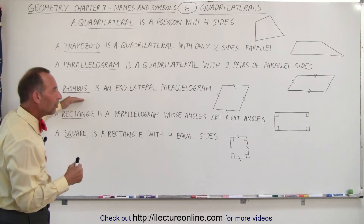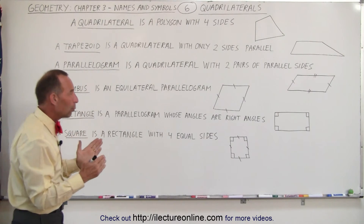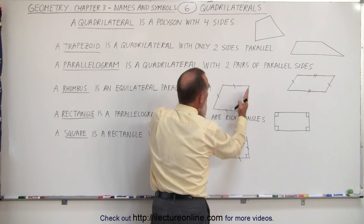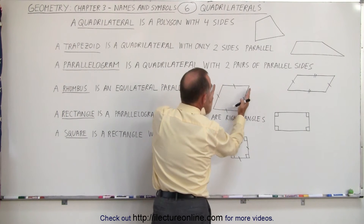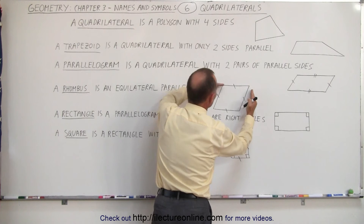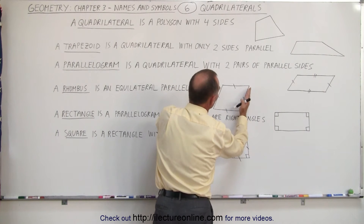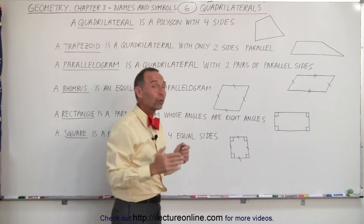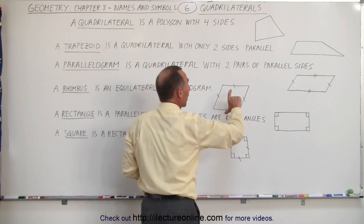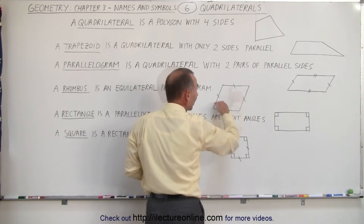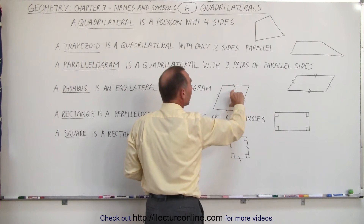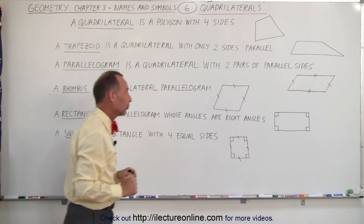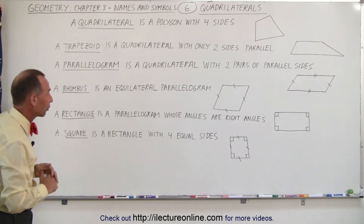A way to think about a rhombus is to take a square and push on one corner to make it look like this. So if we take a square and push it on one side and it bends over, we now have a rhombus. All four sides are the same, all four must be equal in length, and these two sides are parallel and those two sides are parallel to one another — just like it is for a parallelogram.